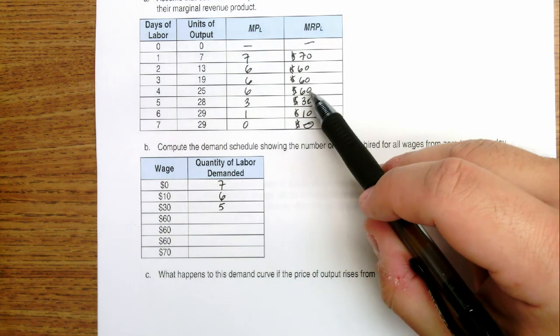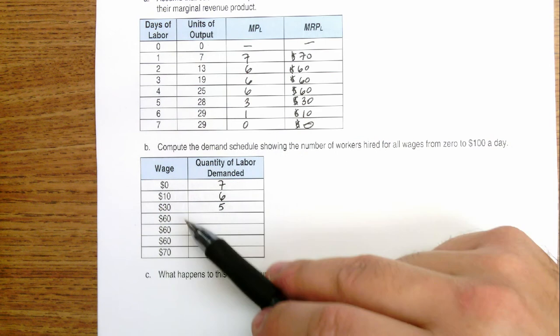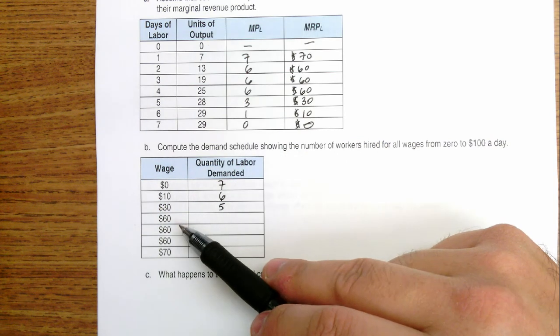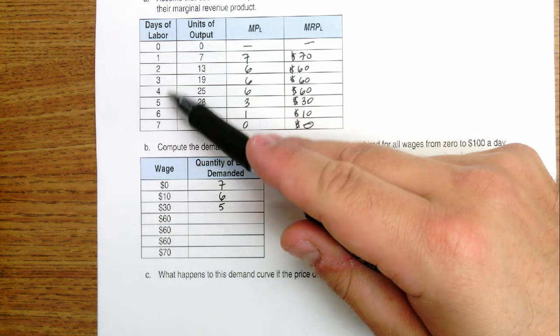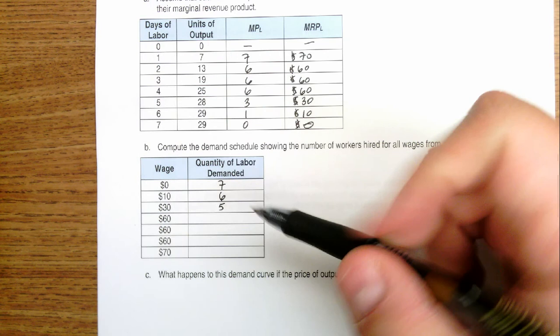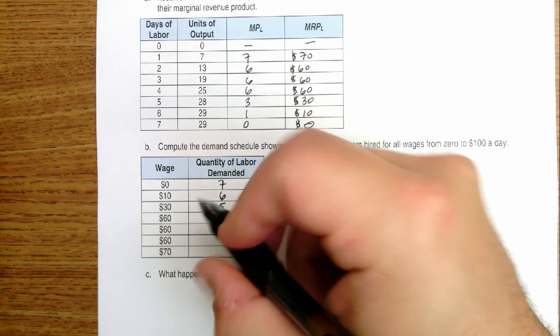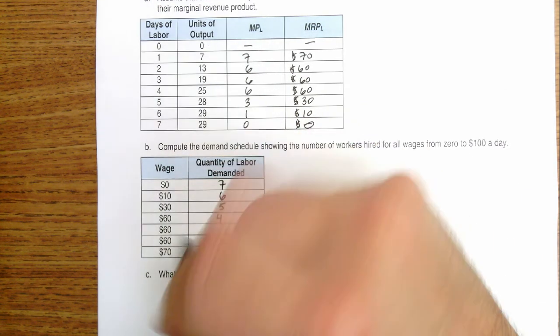If the marginal revenue product is 60 and the wage is 60, then I'm happy hiring between two and four workers. So realistically, I'll hire up to four workers if the wage rate is 60.